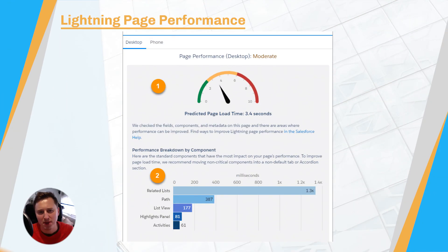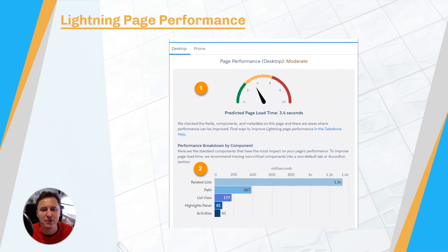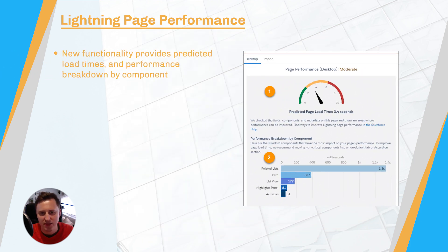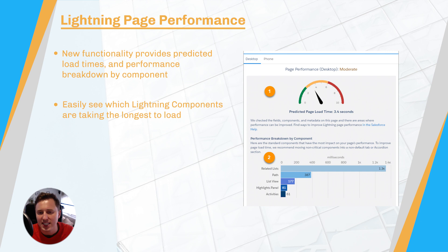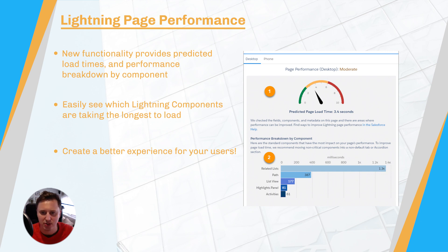One of the most common complaints when Lightning was first released surrounded load time and page speed. In the last release, Salesforce provided us with a page performance widget that gave us high-level information about load times. This feature has been further developed to provide predicted load times as well as a performance breakdown by component, allowing you to easily see which Lightning components are taking the longest to load. All in all, this kind of reporting allows you to create a much better user experience for your users.